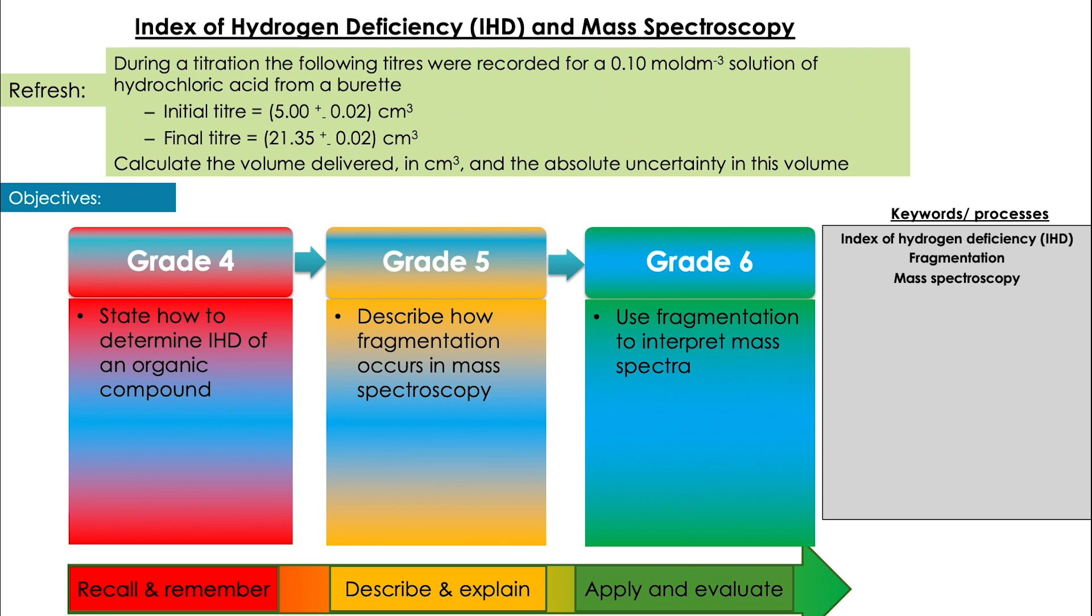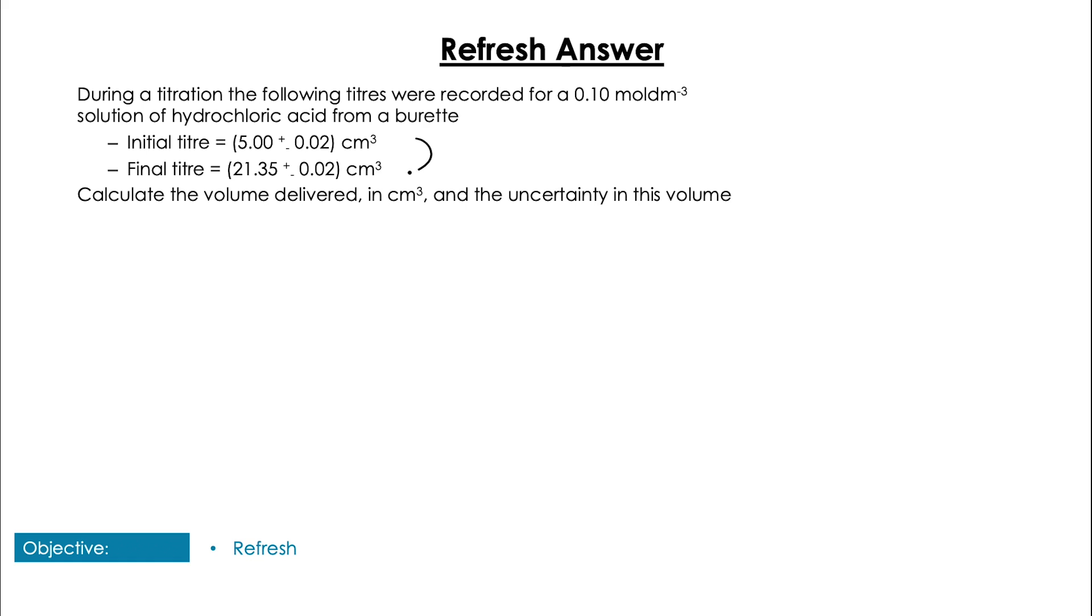Hopefully this question wasn't too difficult. We should have noticed that there were two uncertainties and we measured twice, so first of all we need our overall volume which was 16.35, subtracting 5 from 21.35. And then to propagate our uncertainty, we need to add the two absolute uncertainties of the measurement, giving us 16.35 plus or minus 0.04 cm³.